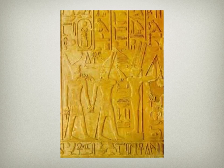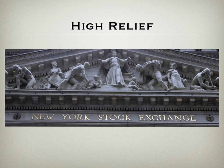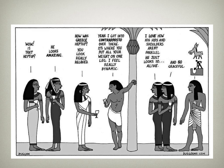We have what's called low relief or bas-relief, where the sculpture is only projected just a slight bit from the background. And then we have what's called high relief or haut-relief, where the sculpture is projected by at least half its depth. You can see here, looking at the pediment on the New York Stock Exchange, the figures almost seem as if they are individual sculptures, but they are actually still relief — still attached to the background.